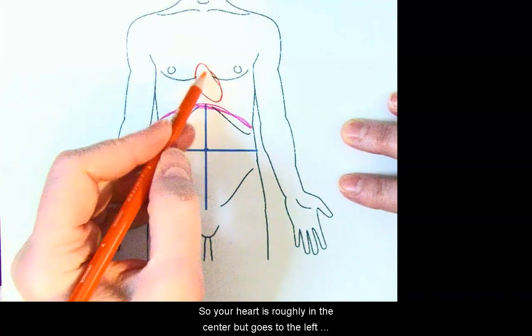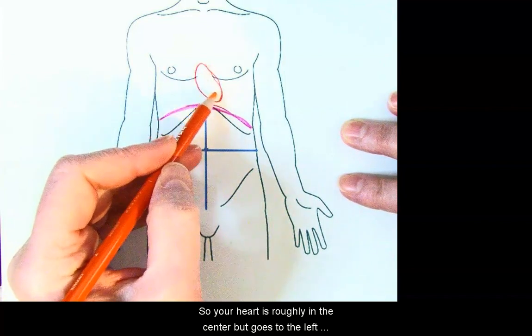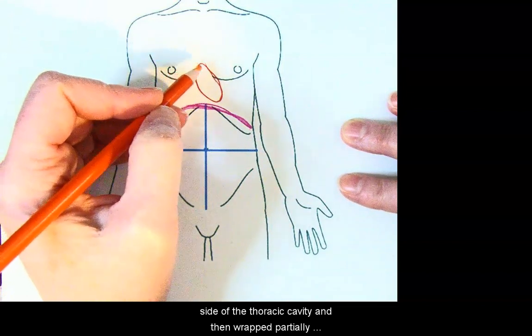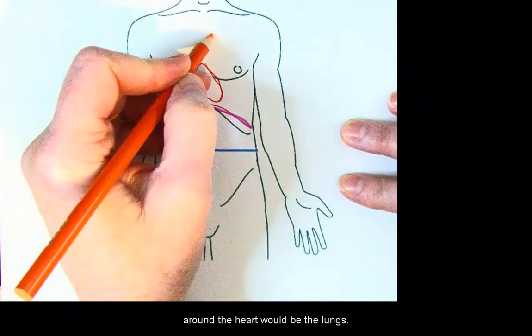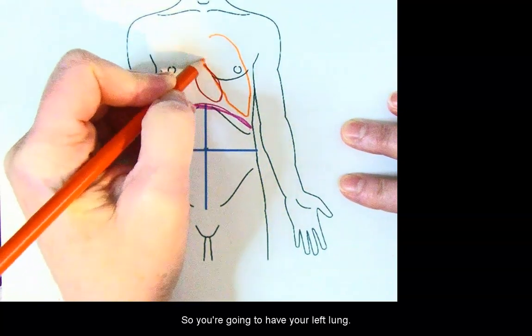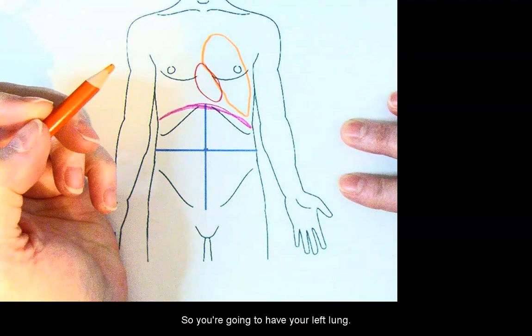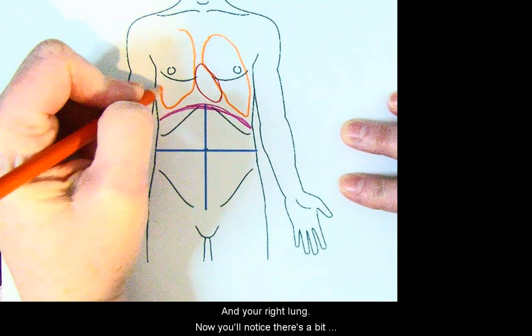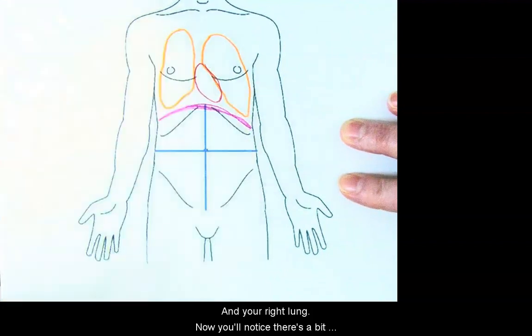So your heart is roughly in the center but goes to the left side of the thoracic cavity, and then wrapped partially around the heart would be the lungs. So you're going to have your left lung and your right lung.